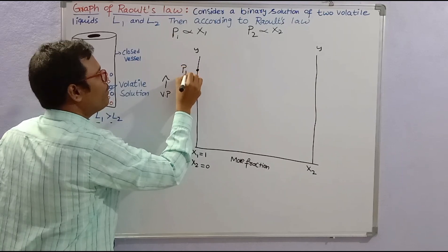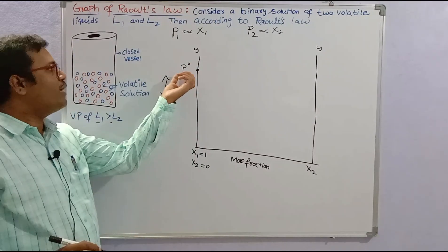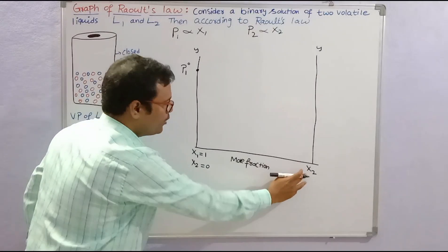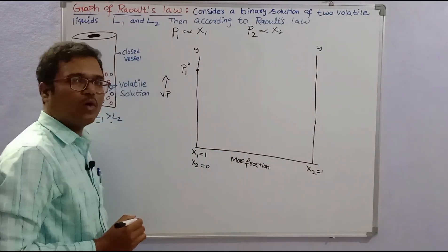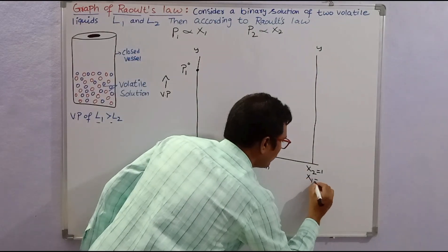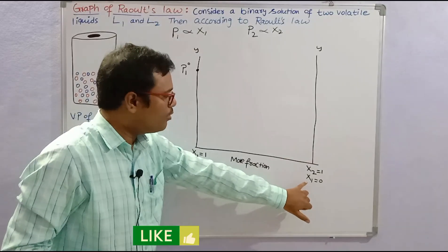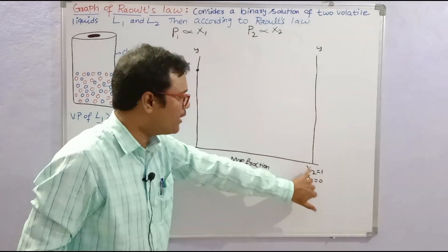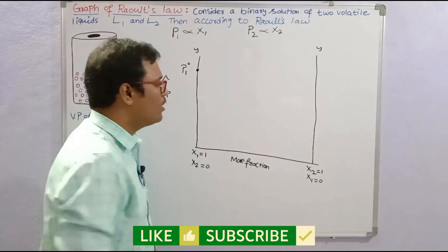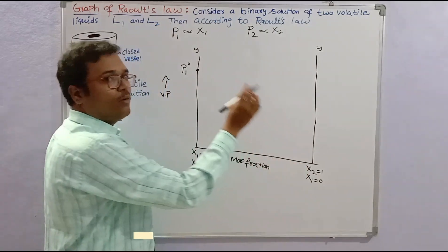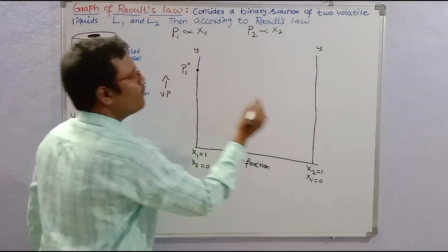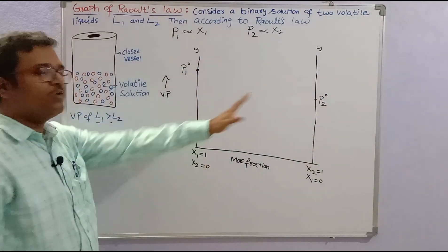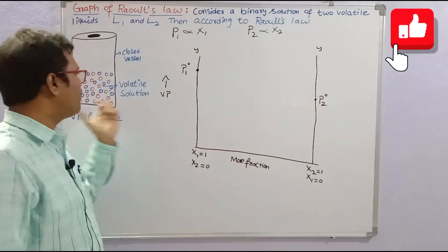Since x1 is equal to 1 and x2 is equal to 0, the vapour pressure here is at its highest, so we mark P1* — the vapour pressure of pure liquid 1. On the right side, pure component 2 is available, so x2 is equal to 1 and x1 is equal to 0. Comparing to P1, we go to a lower level P2, which is the vapour pressure of pure liquid 2.